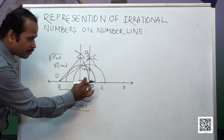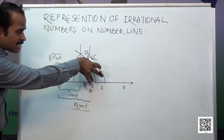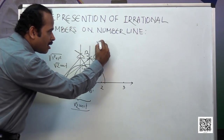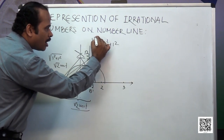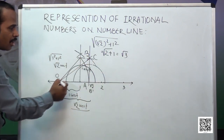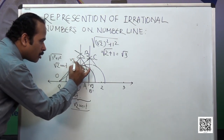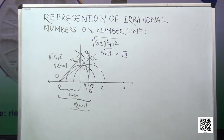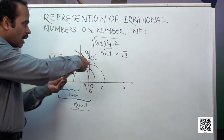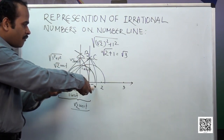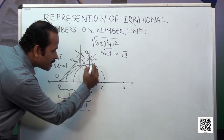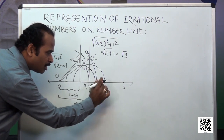B dash C is 1 unit in length. So the length OC becomes the square root of root 2 squared plus 1 squared, which is the square root of 2 plus 1 under root, equal to root 3. So OC has length root 3 units. To bring root 3 onto the number line, I take O as center and OC as radius, draw an arc, and the arc cuts the number line at point C dash. This point C dash on the number line represents root 3.